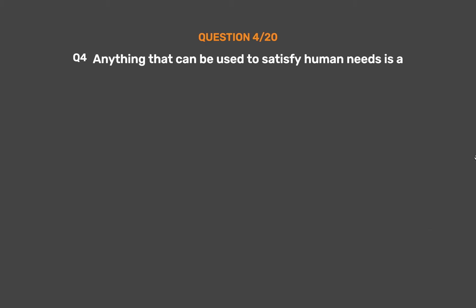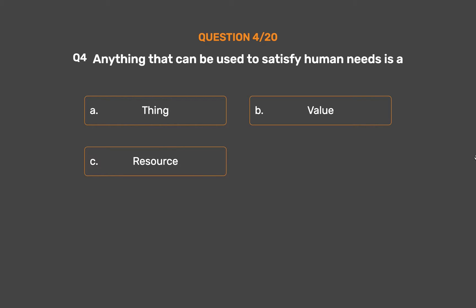Question number 4. Anything that can be used to satisfy human needs is: Option A: Thing. Option B: Value. Option C: Resource. Option D: Utility.